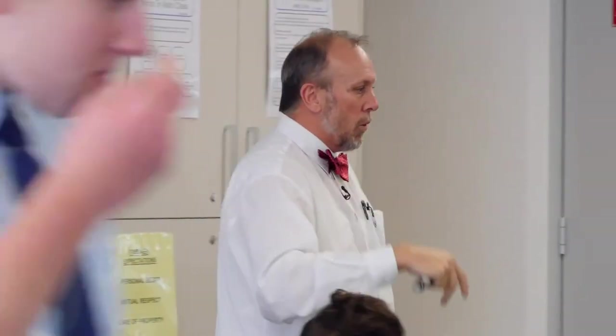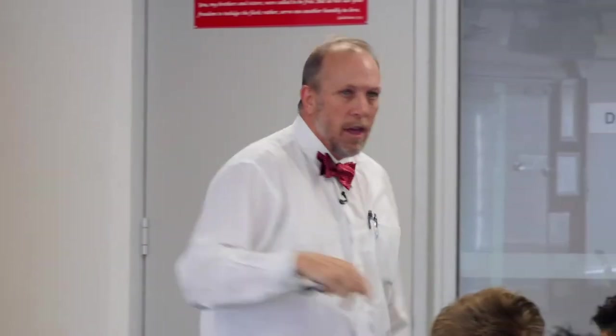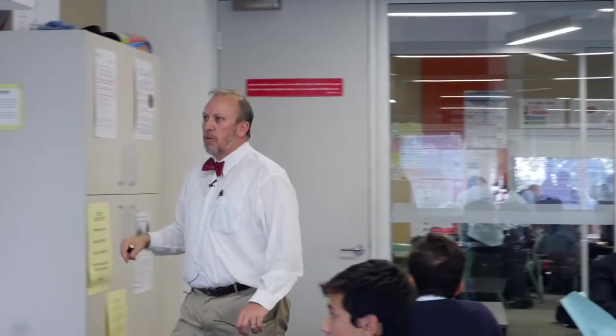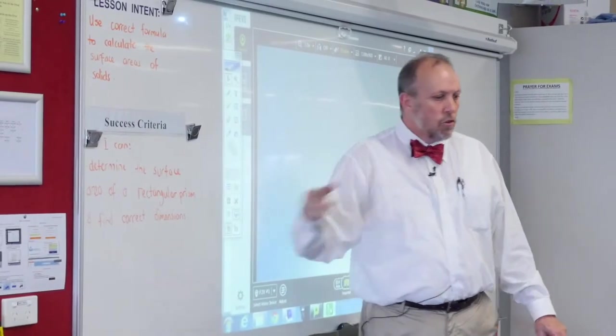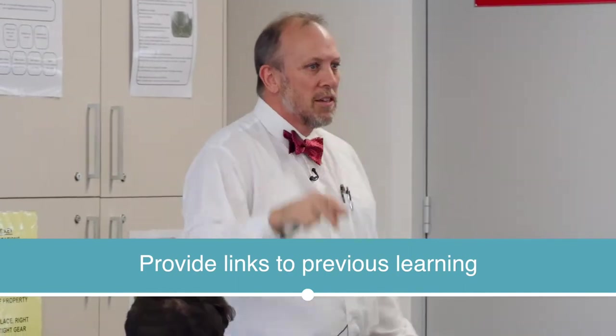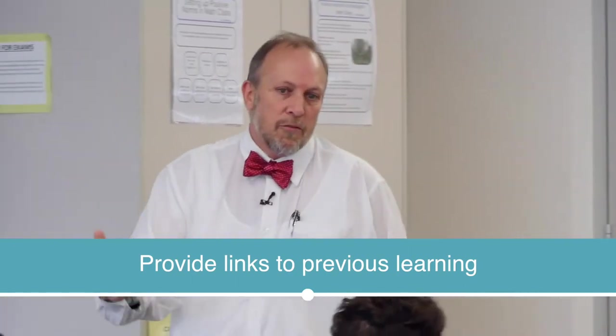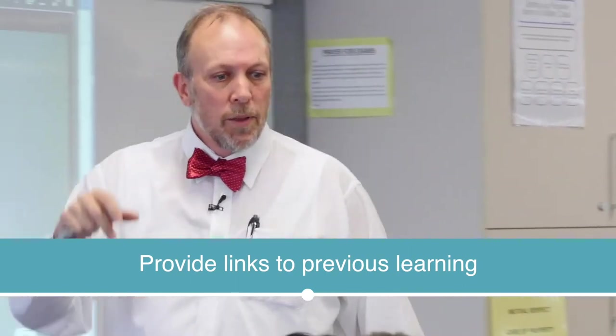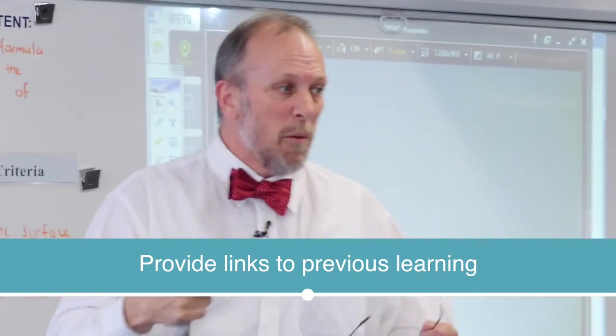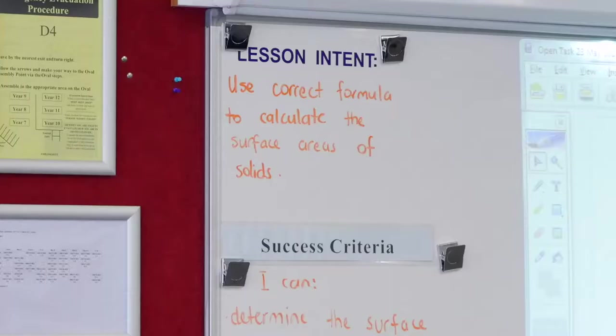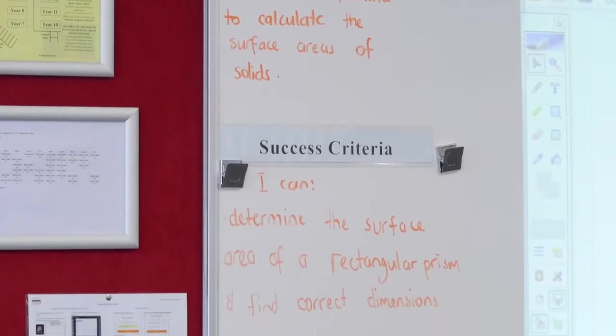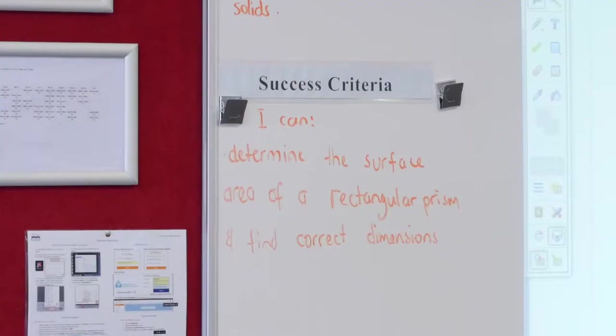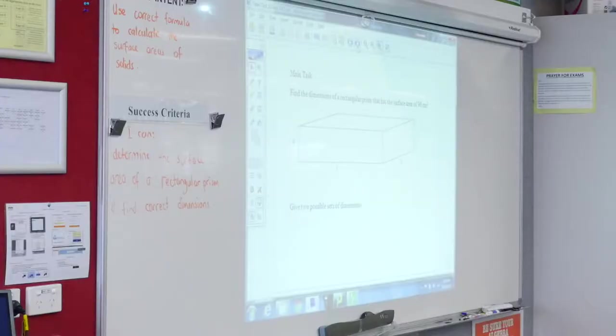So that's going to lead into what we want to do today. And if you have a look at what we want to be able to do, we want to be able to work with what we call surface areas. Do we remember what surface area is from last year? No? Some people? That's okay. Because that's what we want to be able to work with today. But we're going to be working with the idea of the surface area, particularly with a rectangular prism. Now what you just did will relate to what we need to be able to do today.